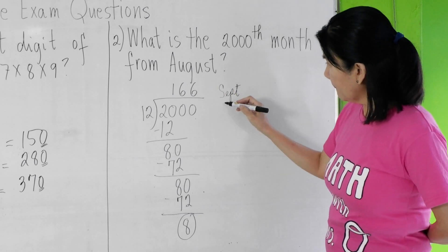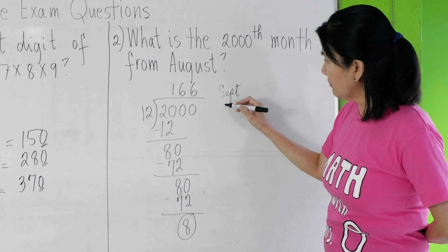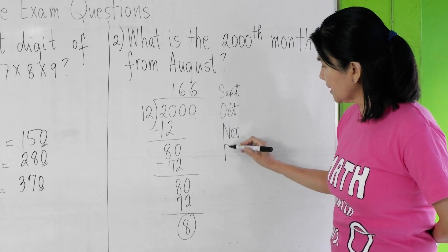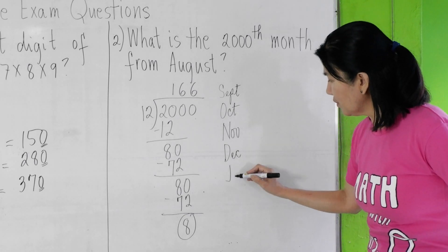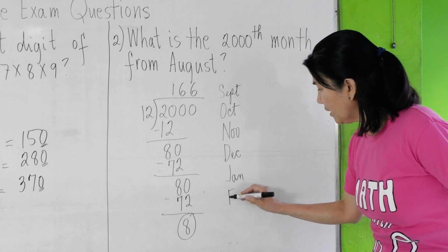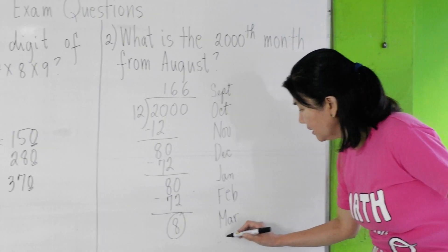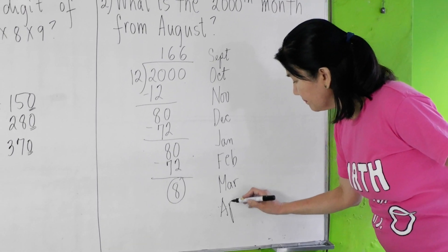Again, down 8 times. So September, October, November, December, January, February, March, April. Let's count.